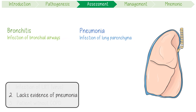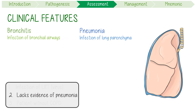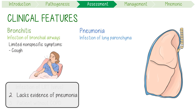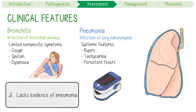Let's further distinguish its clinical features from pneumonia. Acute bronchitis causes limited, non-specific respiratory symptoms, including persistent cough, excessive sputum, and mild dyspnea. Conversely, pneumonia is characterized by systemic features associated with a true parenchymal infection, like rigors, tachycardia, persistent fevers, and hypoxemia.